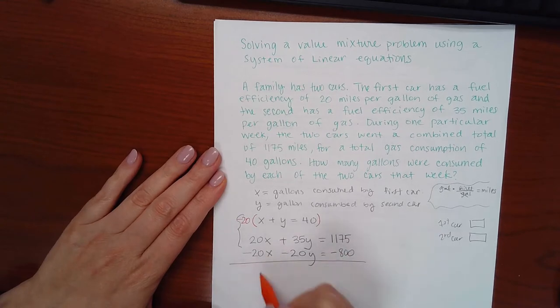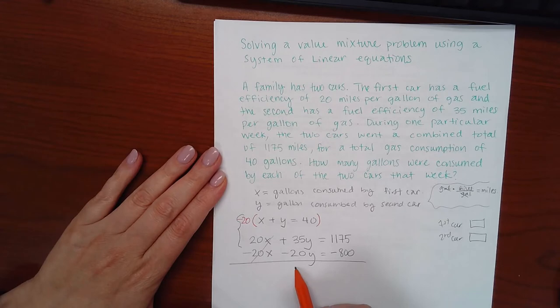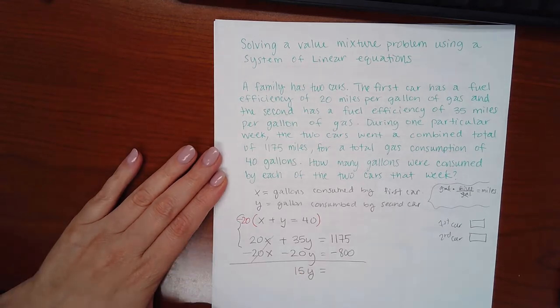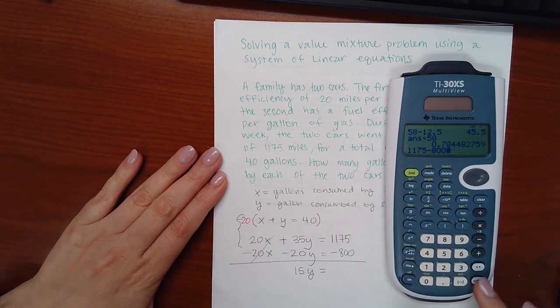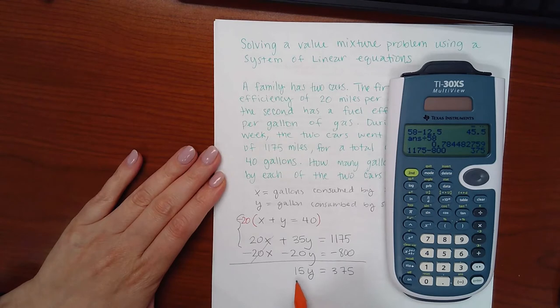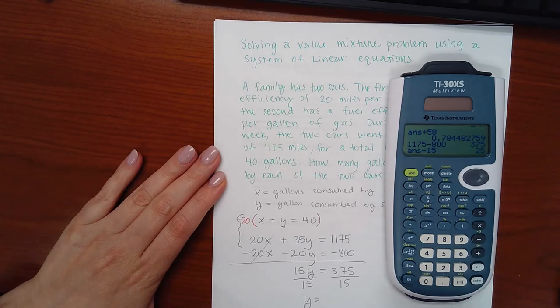When I combine these, the x's will cancel like I anticipated. And I get 15y equals 375. Then I will divide by 15 to actually solve for y, and I get 25.